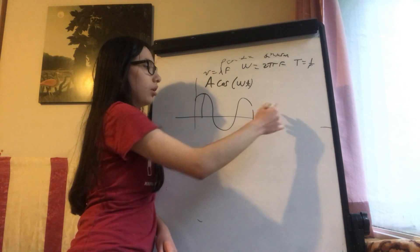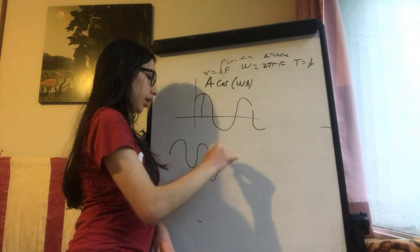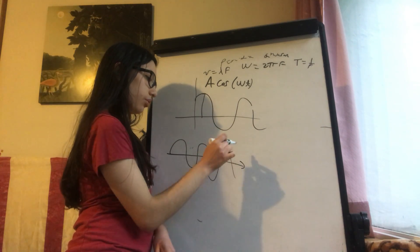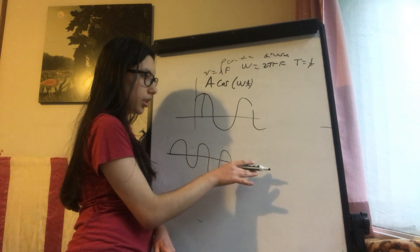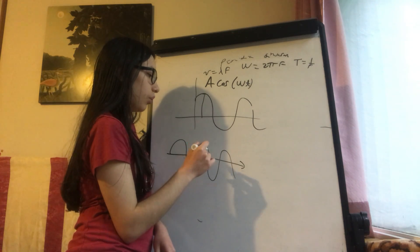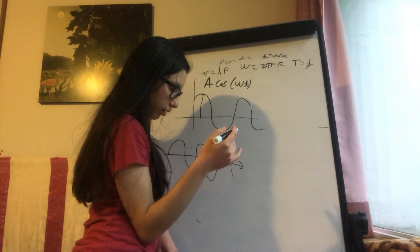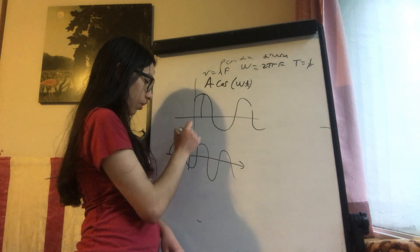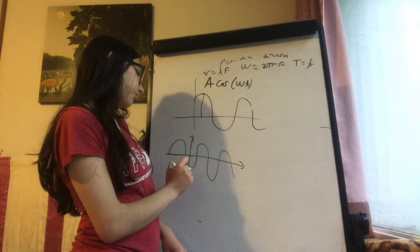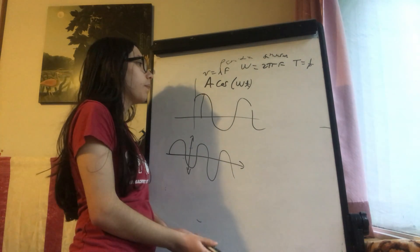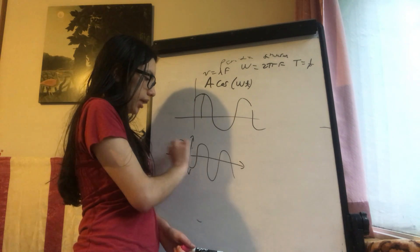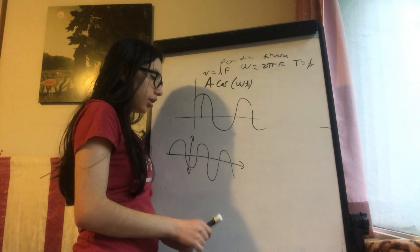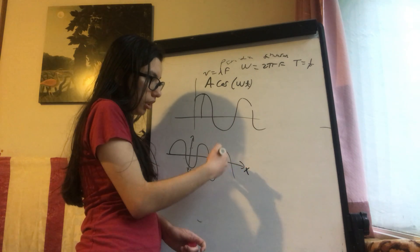Now let's consider the transverse wave. Here we have a transverse wave. Now I'm talking about the real shape of the wave. The propagation of the wave is in this direction, while the individual movement of particles of the medium is orthogonal — perpendicular — to that, but with the same speed. Here we have the equilibrium; we call this the x-axis of the wave.